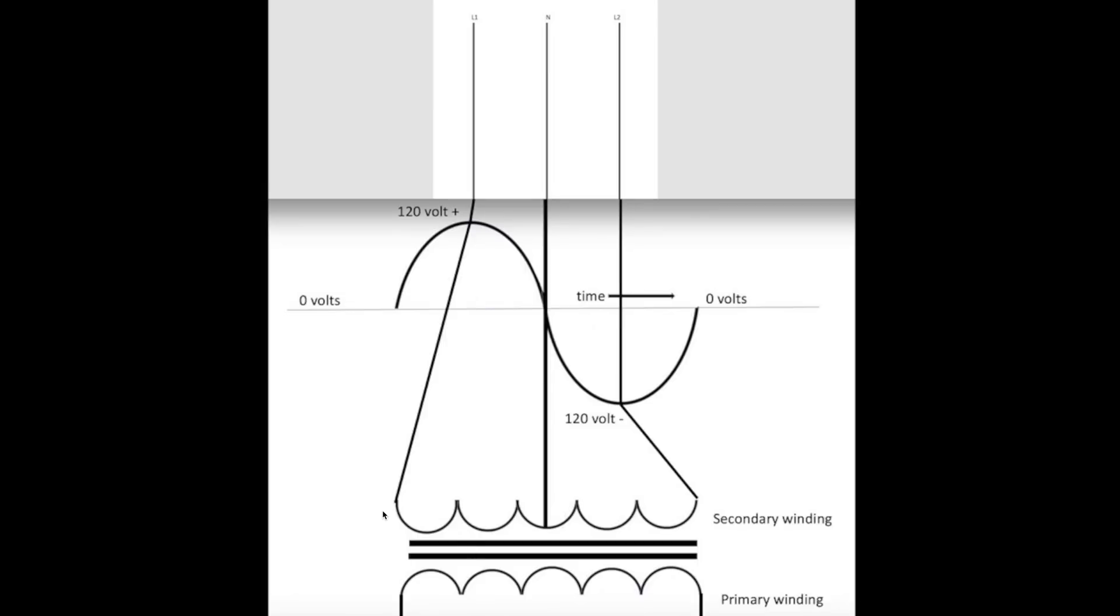So this winding, if I went from this winding here to this winding here, I would get 240 volts. That would be up here, L1 and L2.